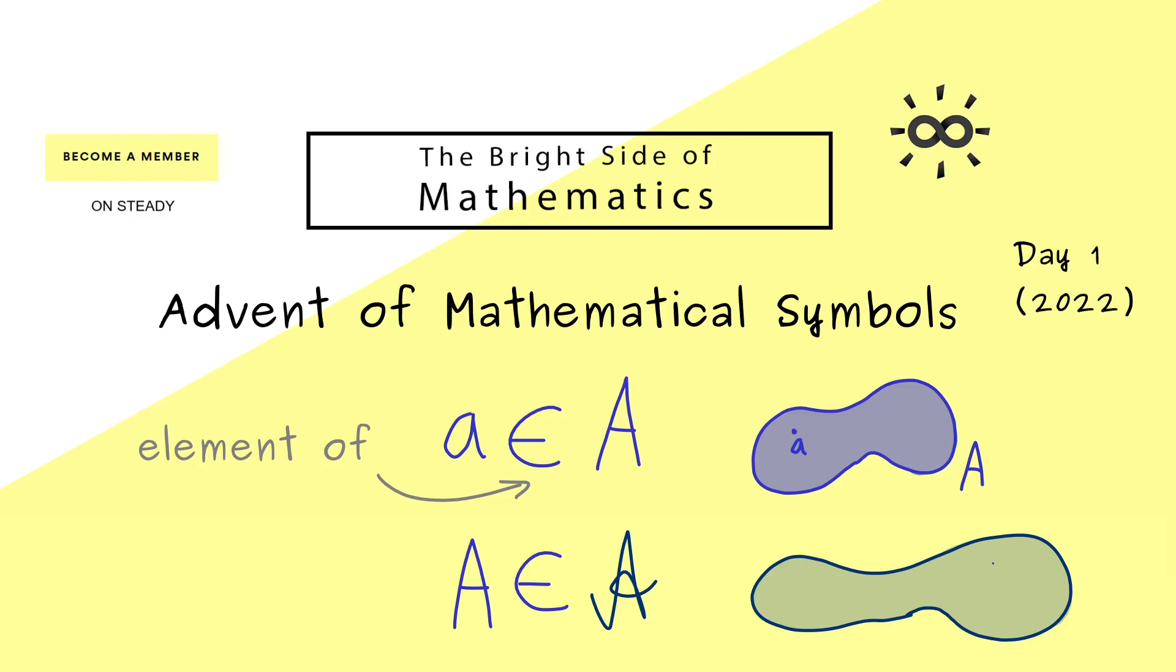Hence, for this, the visualization is exactly the same. Capital A can be seen as a point in this curved A.